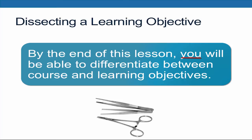Next, you will notice that this learning objective uses the word 'differentiate,' which is an action verb drawn from Bloom's taxonomy. We'll talk about that more in depth in the next presentation in this series, but for now you should know that all learning objectives should include an action verb drawn from one of the levels of Bloom's taxonomy. This ensures that your learning objectives describe measurable and assessable student behavior.